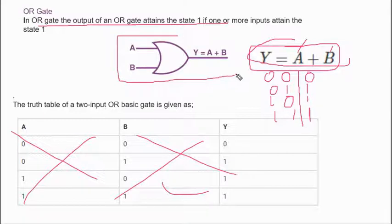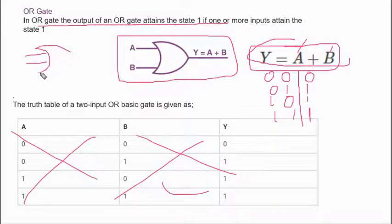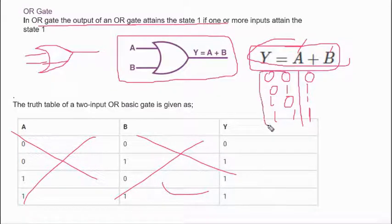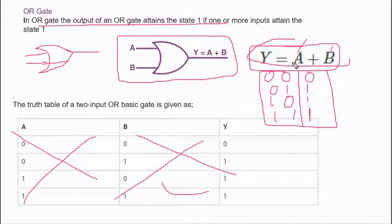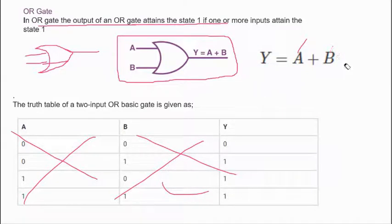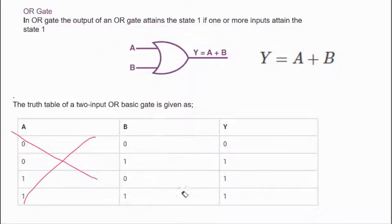Remember this diagram — it is also very important. The OR gate symbol has an inward curve on the input side and looks like a rocket on the output side. If you remember this formula and draw the inputs as 00, 01, 10, 11, you can derive the truth table. Using this truth table you can solve many problems.